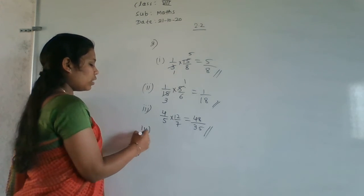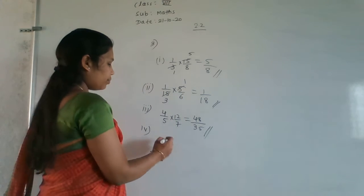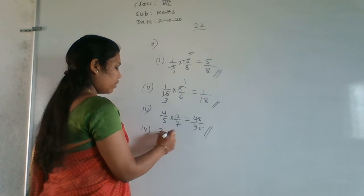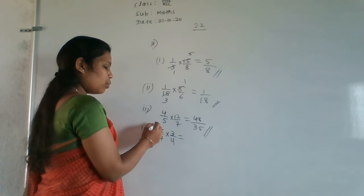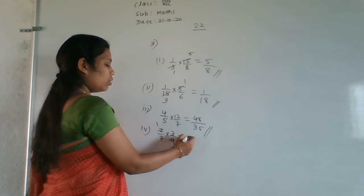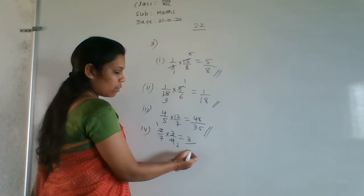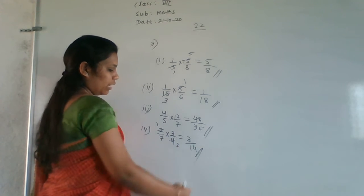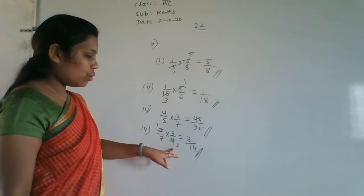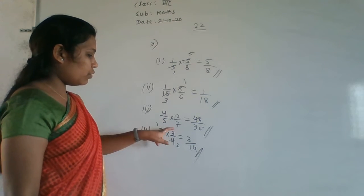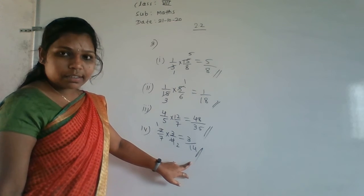Fourth question: 2/7 × 3/4. Cancel 2 and 4: 2 ones are 2, 2 twos are 4. Remaining numerator: 1×3=3. Remaining denominator: 7×2=14. Answer is 3/14.